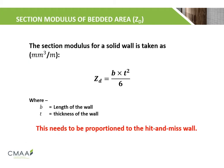Next, the section modulus of the bedded area Zd is calculated. This is calculated by multiplying B, the length of the wall, by the thickness of the wall squared, over 6. It is important to proportion this for the hit-and-miss wall.